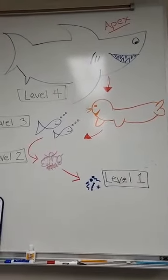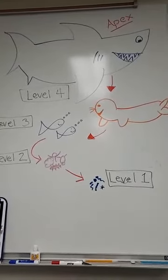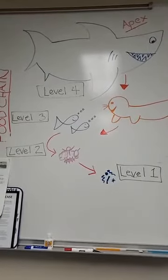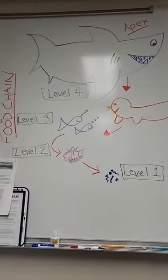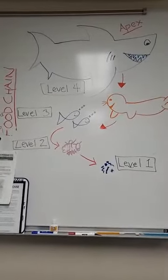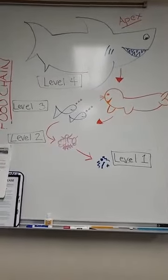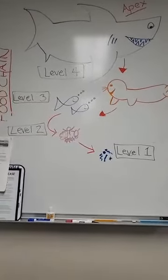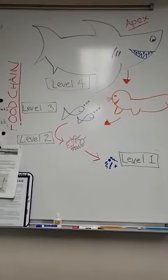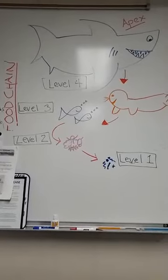Every animal has its own unique food web — that's how everything in the marine world is pretty much interconnected, like our sea star. Does anyone at home remember what our sea star eats? Our sea star eats clams or mussels, and those clams and mussels eat the plankton in the water. So at home, if you want to do your own food web and send me a picture of it, I would love that — you could use any animal.